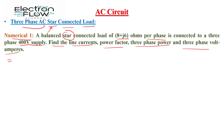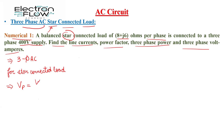In the three-phase AC circuit, the condition for a star-connected load is that the phase voltage is equal to line voltage divided by root 3. Firstly we need to calculate the phase voltage. The 400 volts given to us is the line voltage, so the phase voltage is equal to 400 divided by root 3, which equals 230.94 volts.